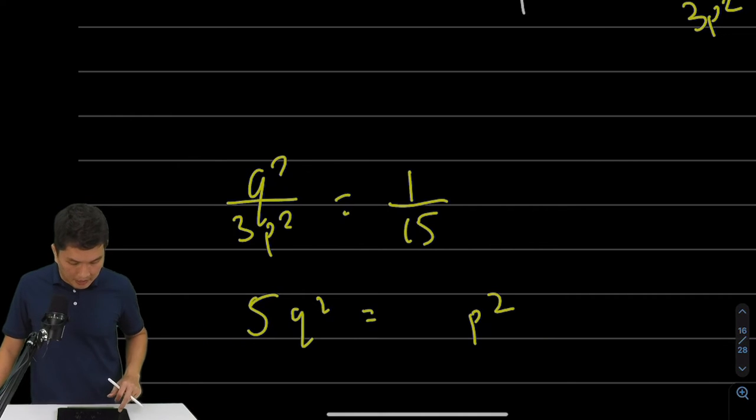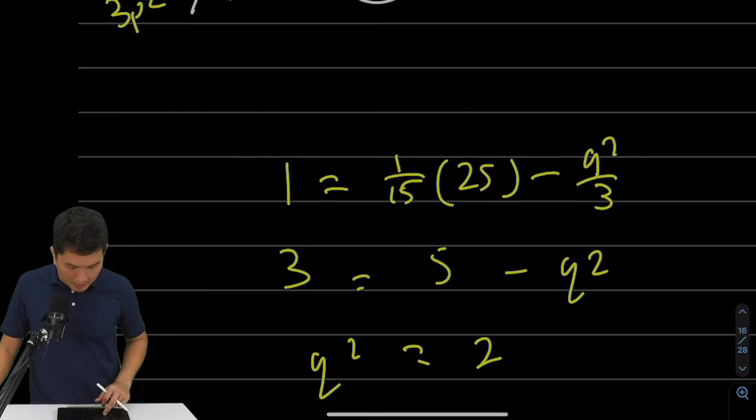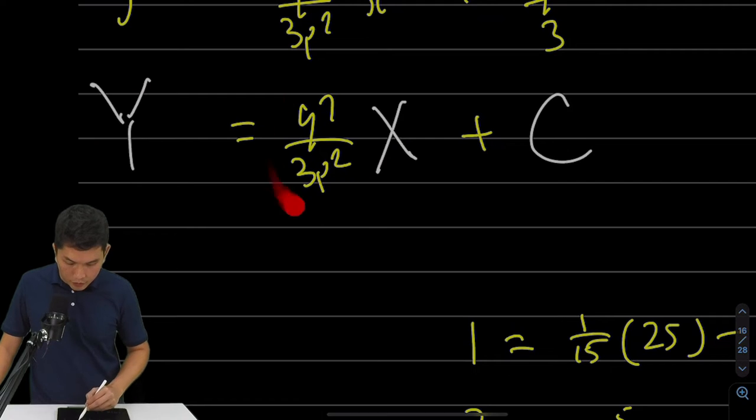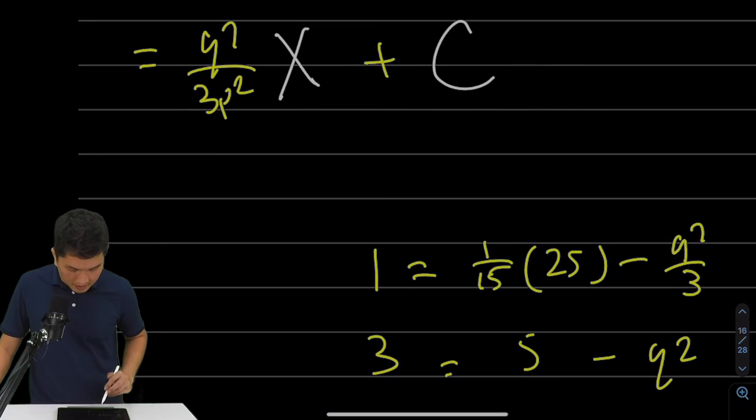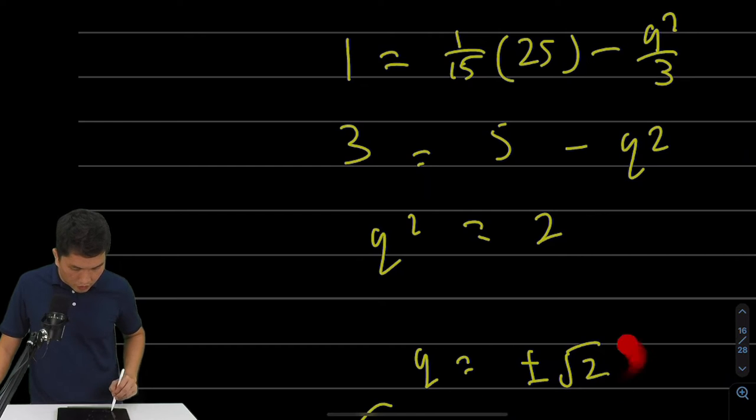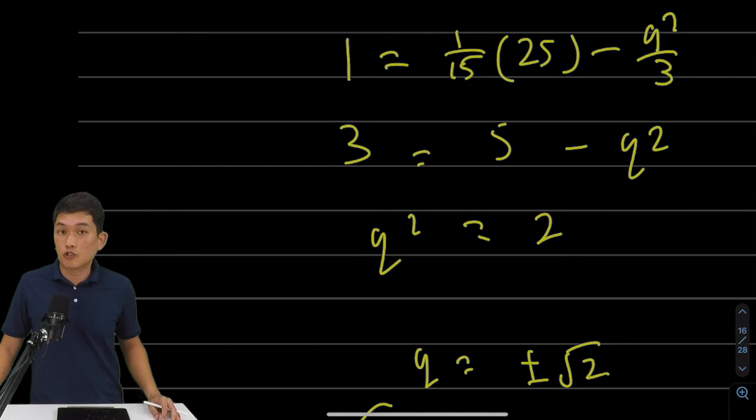And that other equation comes from substituting x equals to 25, y equals to 1. If you substitute that in into here, don't forget that this is actually just 1 over 15. You can solve for q. Solving for q will give you q equals to plus minus square root of 2.